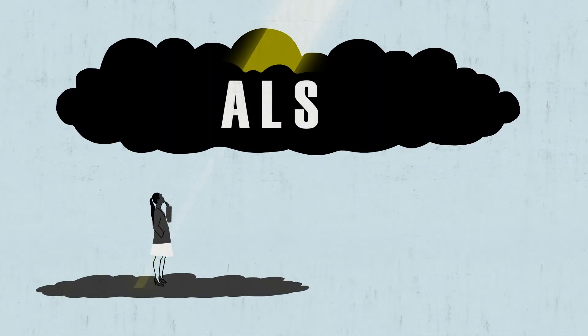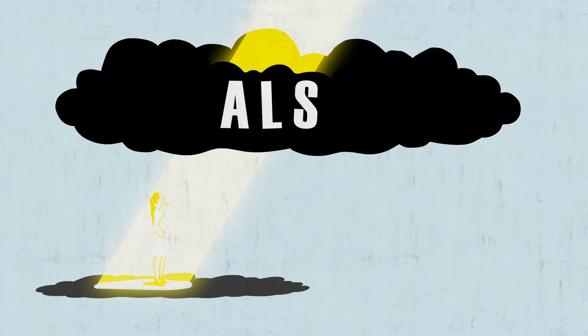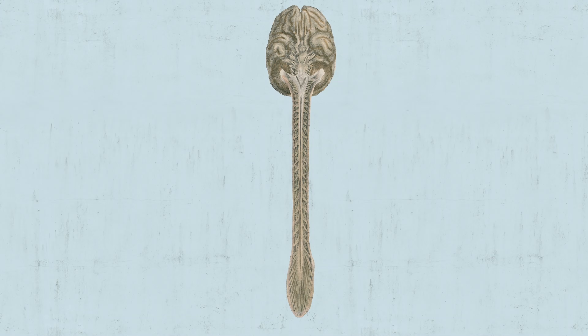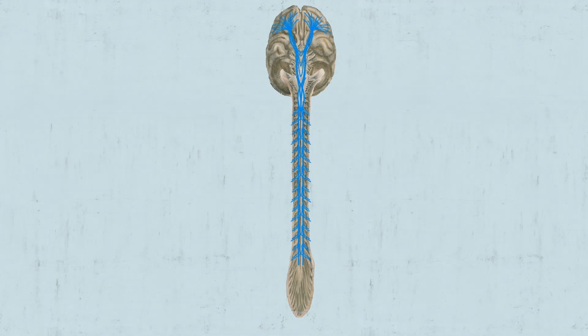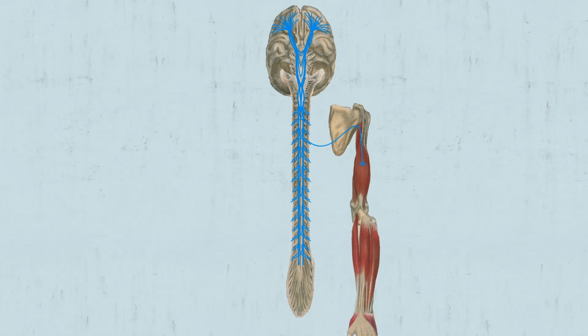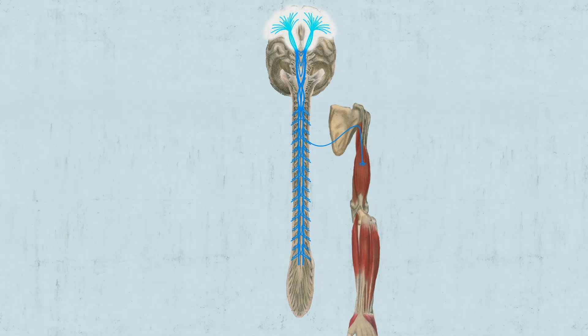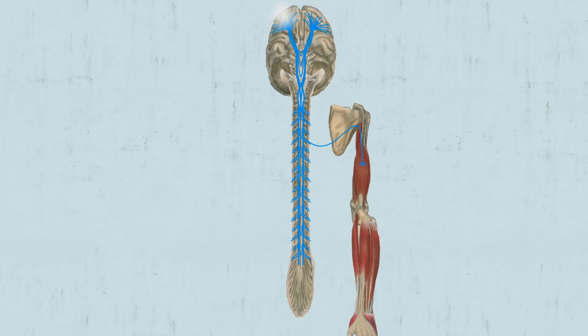Despite the many unknowns, we do have some insight into how ALS impacts the neuromuscular system. ALS affects two types of nerve cells called the upper and lower motor neurons. In a healthy body, the upper motor neurons, which sit in the brain's cortex, transmit messages from the brain to the lower motor neurons, situated in the spinal cord.